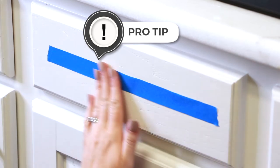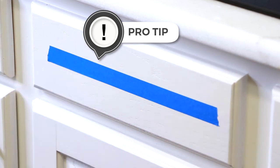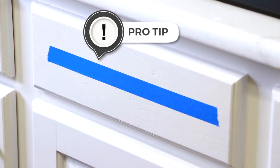Pro tip: use a piece of painter's tape on your drawer front so you can mark measurements without leaving permanent marks on your cabinets.